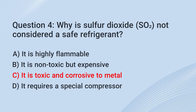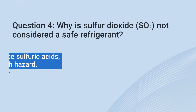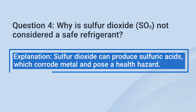The correct answer is C. It is toxic and corrosive to metal. Explanation: Sulfur dioxide can produce sulfuric acid, which corrodes metal and poses a health hazard.